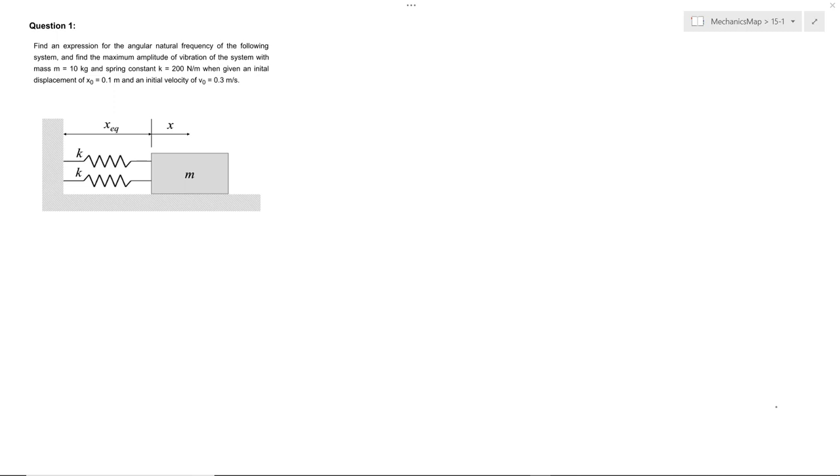Okay, so we're going to go through question one in free undamped vibrations. We've got a system consisting of a mass with two identical springs, each with spring constant k, initially sitting at their unstretched position at equilibrium. We're asked to find an expression of the natural angular frequency and to find the maximum amplitude of vibration of the system with given initial conditions.